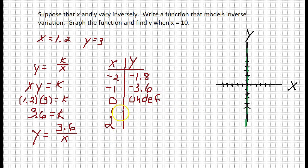If I plugged in positive 1, well, 3.6 divided by 1 is 3.6. And if I took 3.6 divided by positive 2, I am going to get positive 1.8. Let's plot these points and see what it looks like.